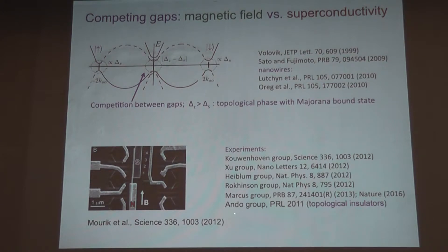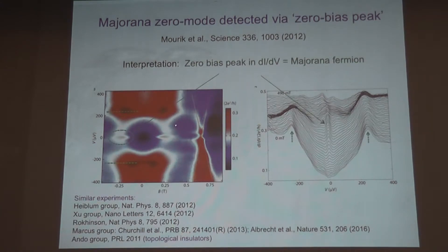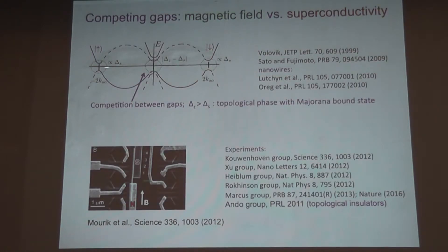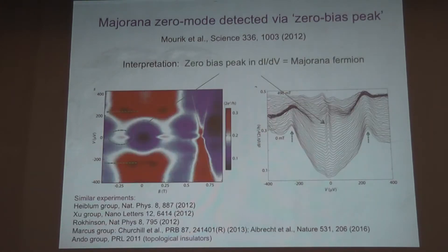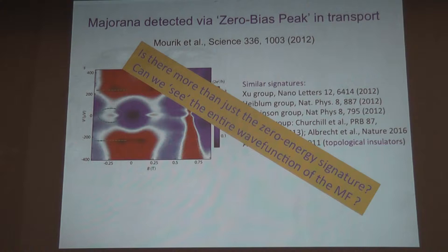There are a number of other groups also working on topological insulators with similar effects. Basically, if you have a bound state sitting in the gap, it is seen in the transport properties as an additional feature in a color plot as a function of magnetic field — you get an enhanced current through the system. This is a zero bias peak, which is attributed to the existence of a Majorana fermion. This happened around 2012, four years ago or so. One can also ask: is there more than just a zero energy signature? Can we see more of the entire wave function of a Majorana?